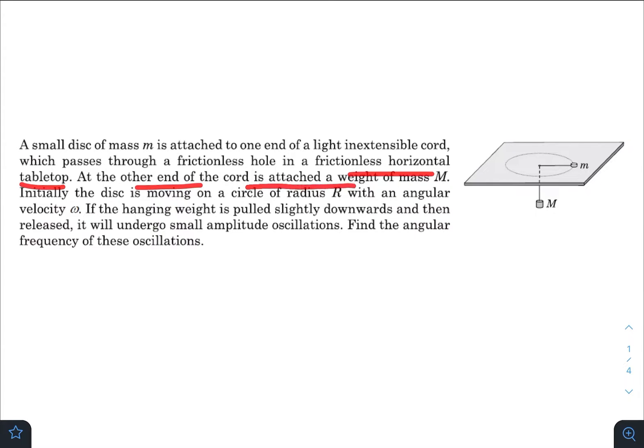At the other end of the chord is attached a weight of mass capital M. Initially the disk is moving on a circle of radius capital R with an angular velocity omega. If the hanging weight is pulled slightly downwards and then released it will undergo small amplitude oscillations. Find the angular frequency of this oscillation.